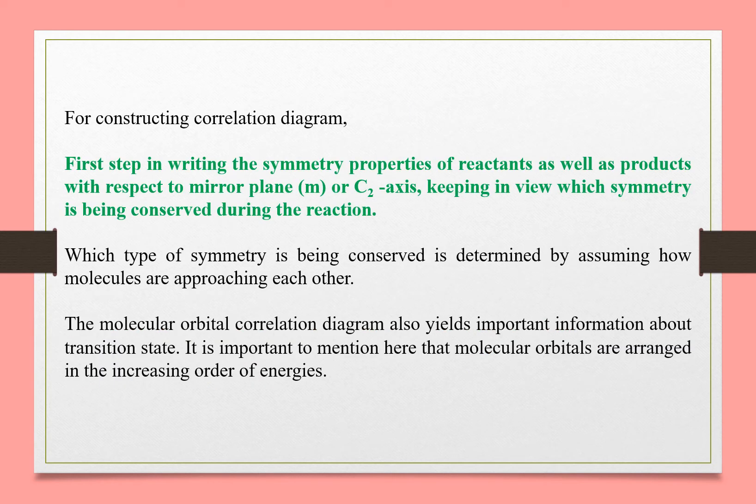For constructing a correlation diagram, the first step is writing the symmetry properties of reactants as well as products with respect to the mirror plane, that is the C2 axis, keeping in view which symmetry is being conserved during the reaction. Which type of symmetry is conserved is determined by assuming how molecules are approaching each other.